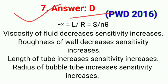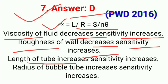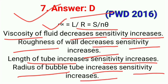The sensitivity formula is: alpha = L/R = S/(E·theta). Sensitivity increases when viscosity of fluid decreases, roughness of wall decreases, length of tube increases, or radius of bubble tube increases. So the correct answer is option D.